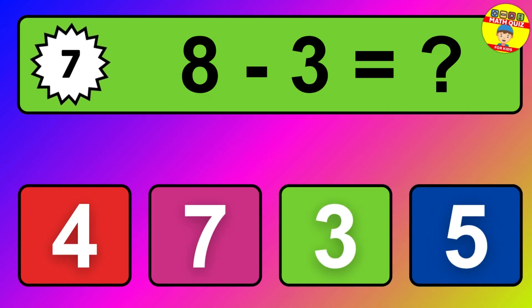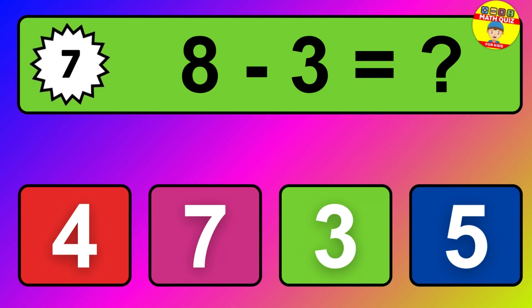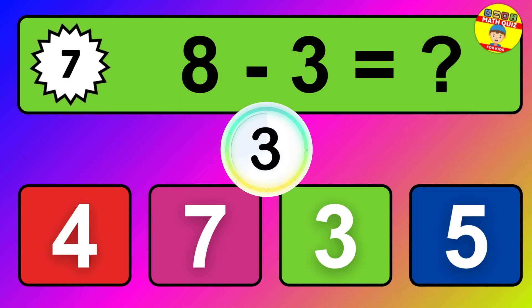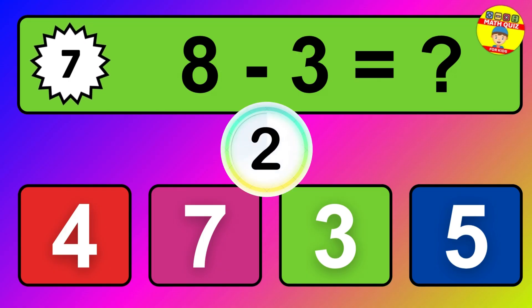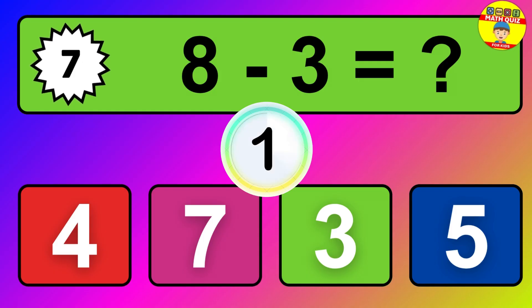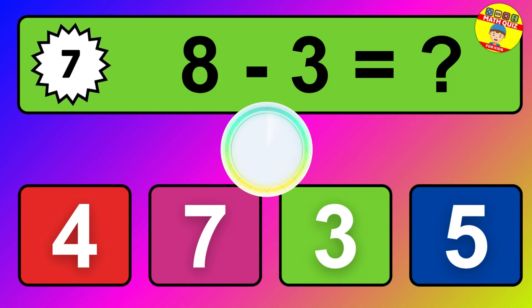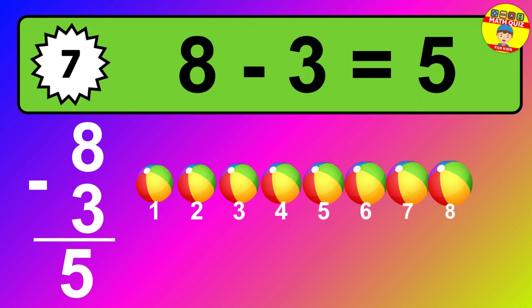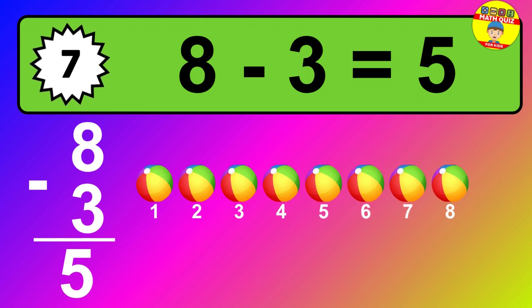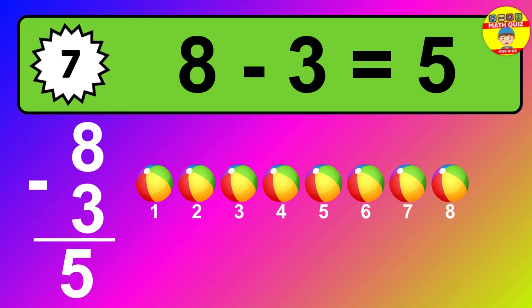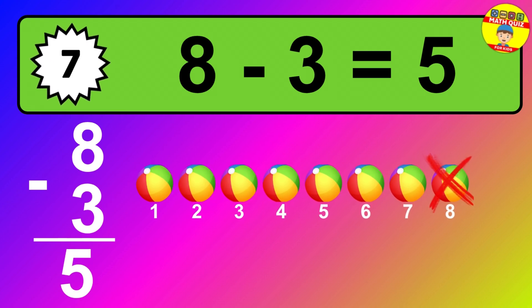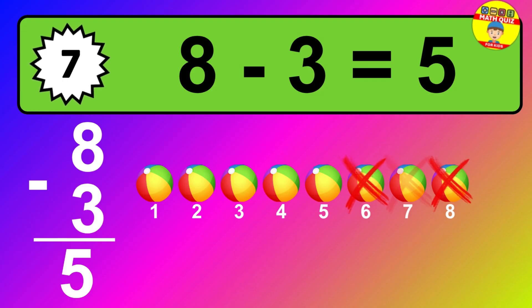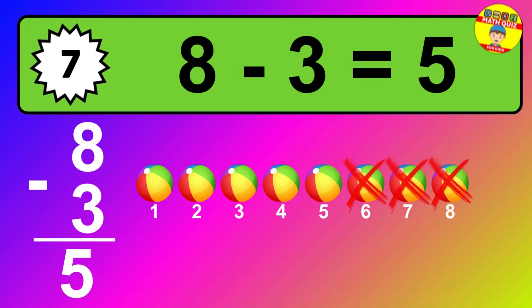Question seven: eight minus three equals what? So the answer is eight minus three is five. Let's count it: one, two, three, four, five.